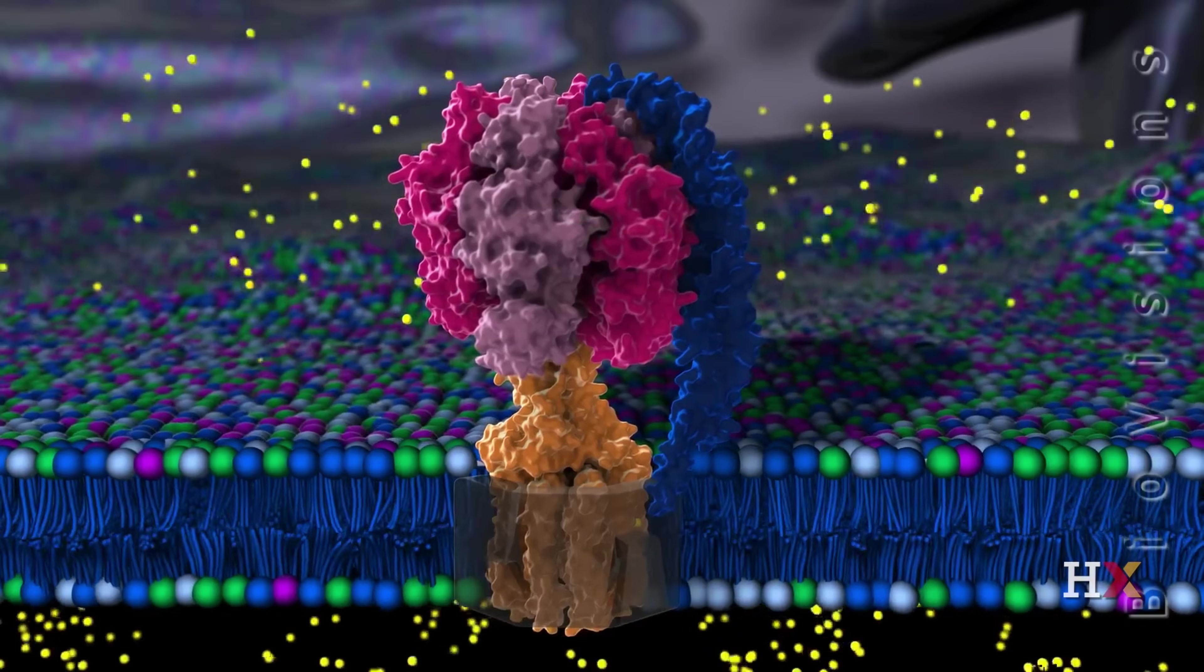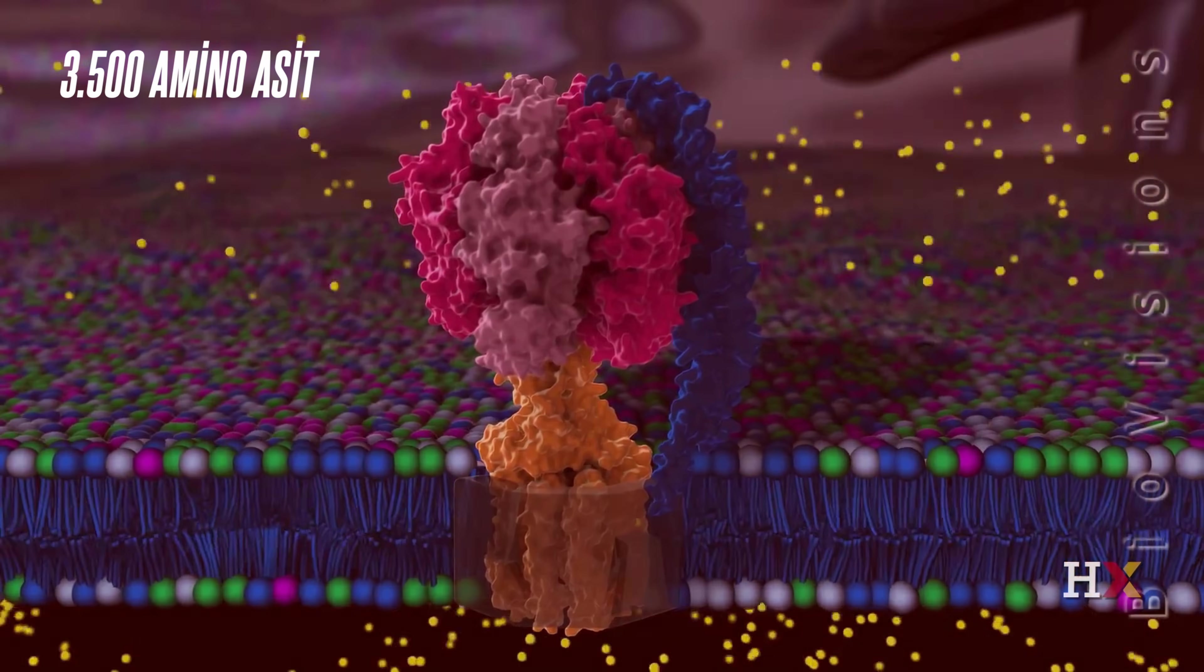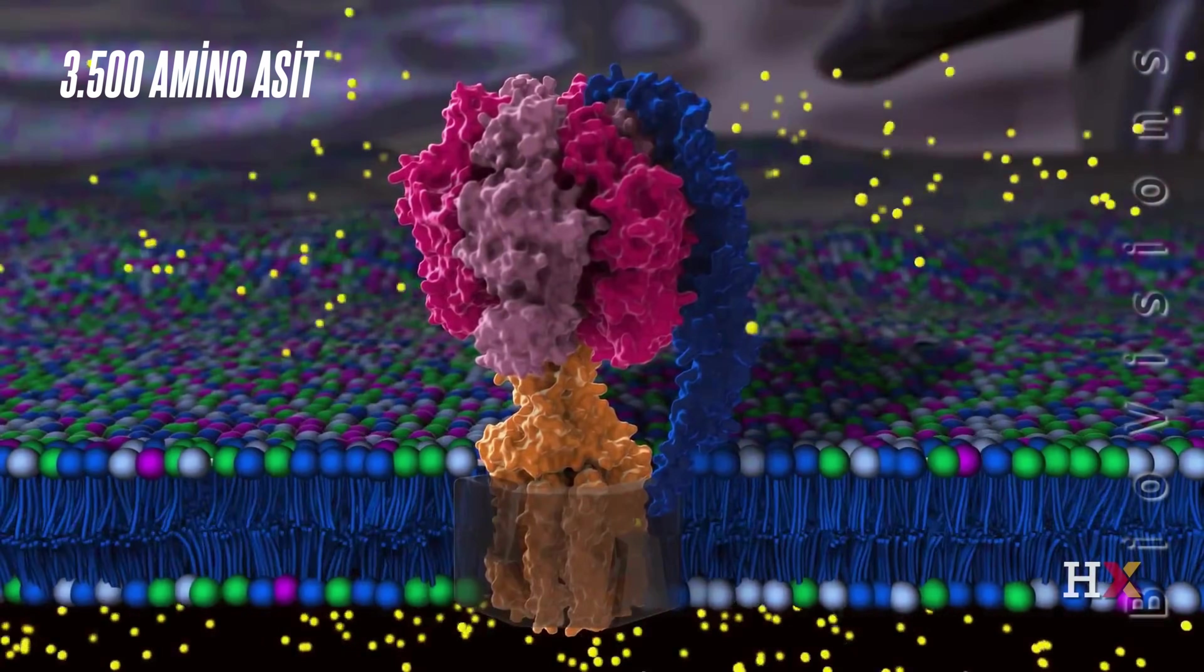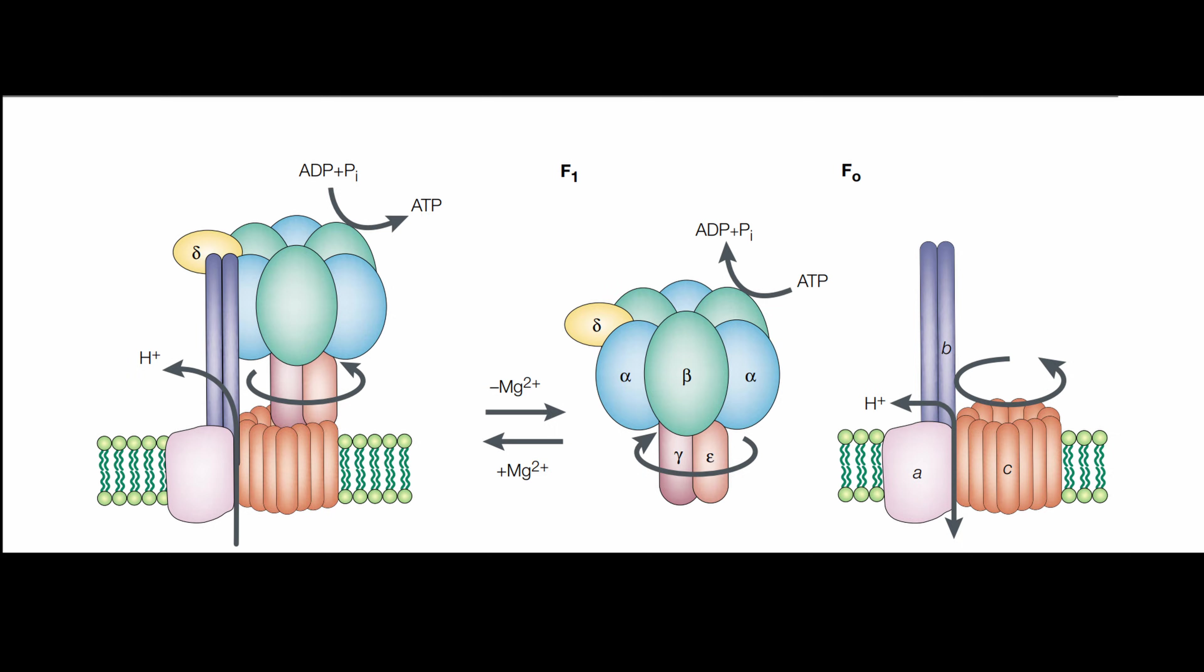The ATP synthase engine consists of approximately 3,500 amino acids. Its main parts consist of more than 30 proteins from those pieces. The F1 part of the engine contains alpha, beta, gamma, delta, and epsilon subunits. There are 15 subunits in the F0 part.